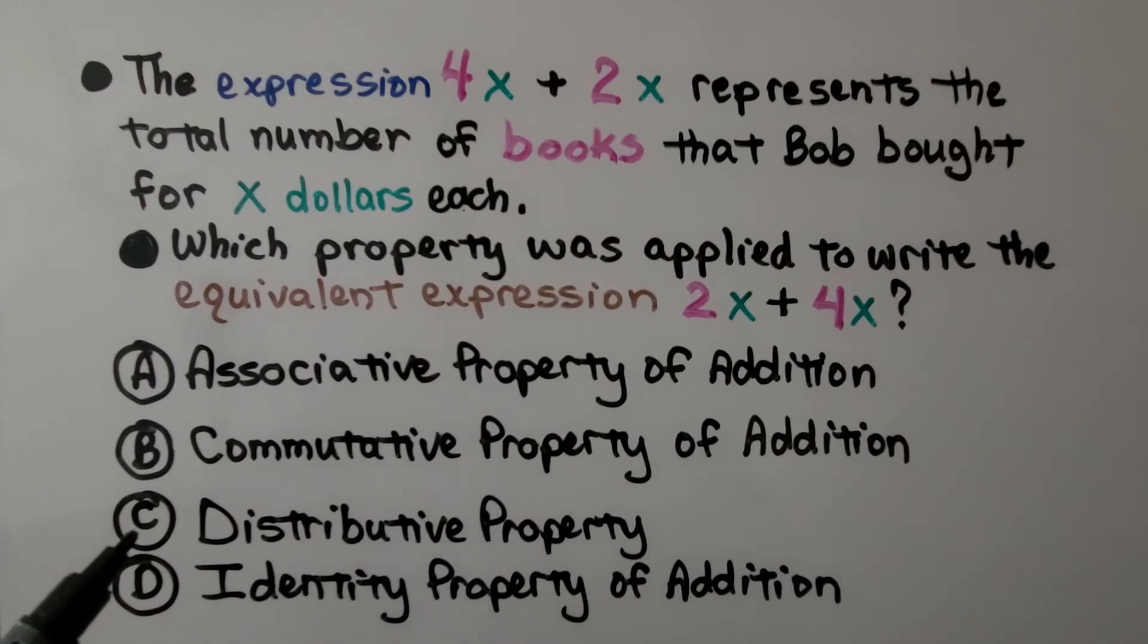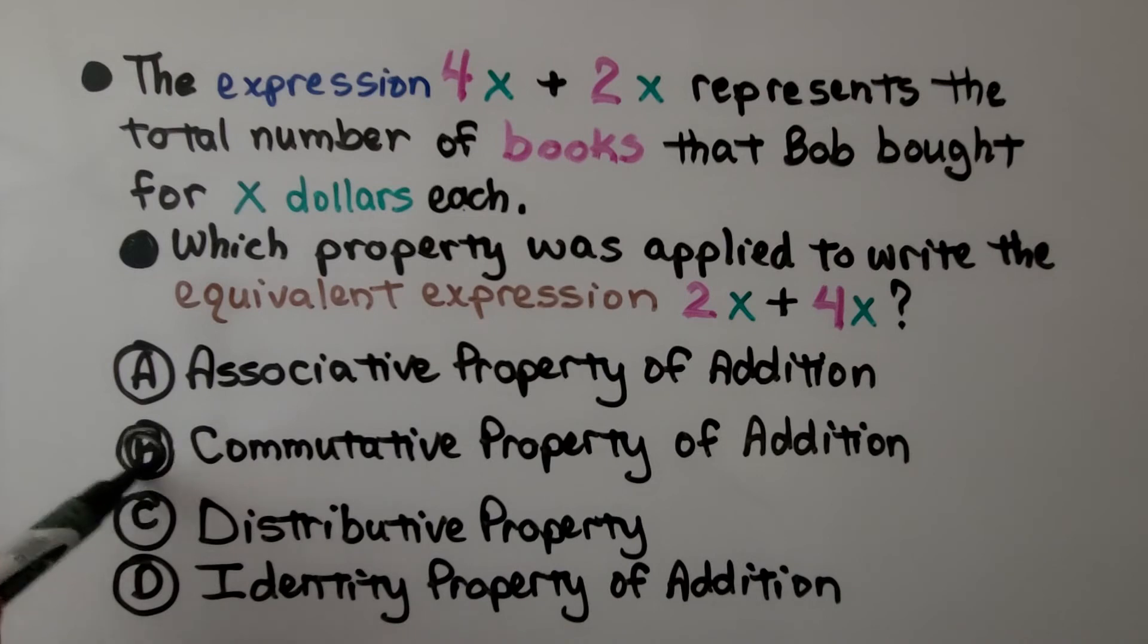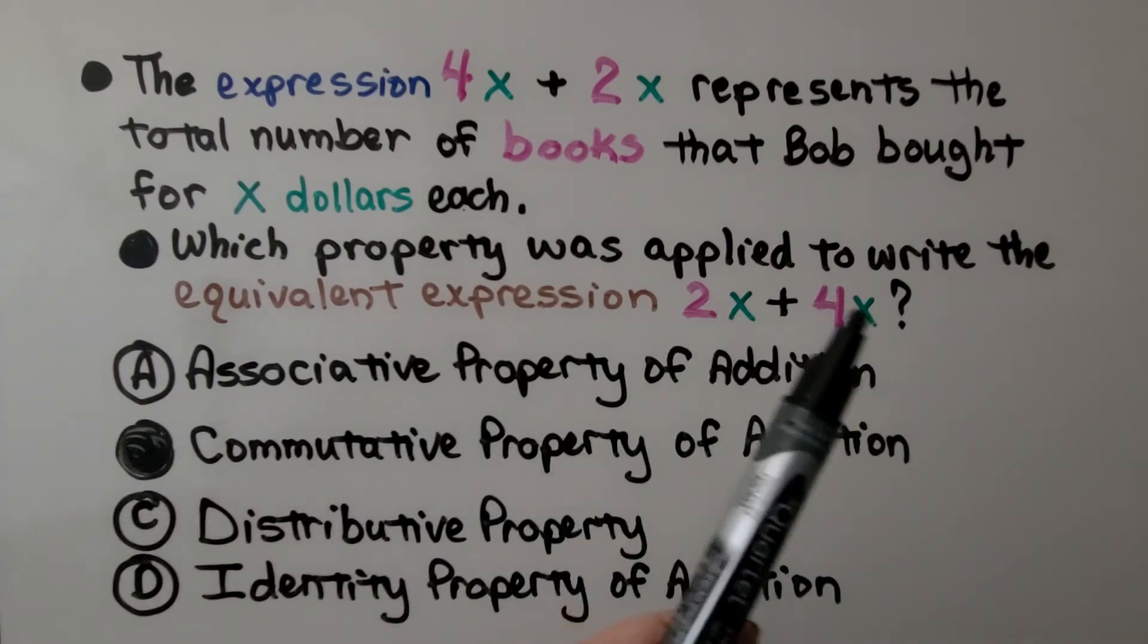Distributive property. No, we're not distributing anything here. Identity property of addition. We're not adding 0. So, if you thought that it was the commutative property of addition, you're right. It was b. We just changed the order.